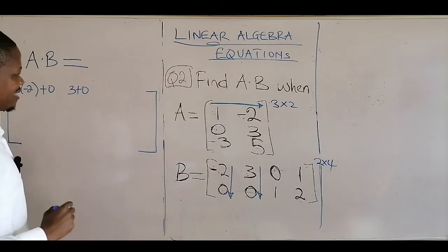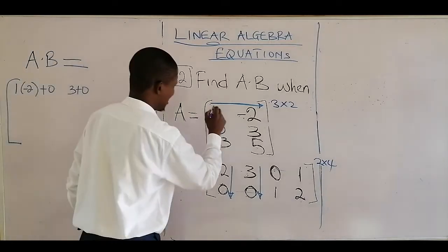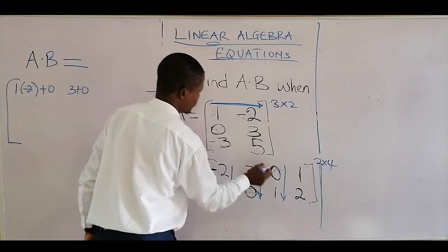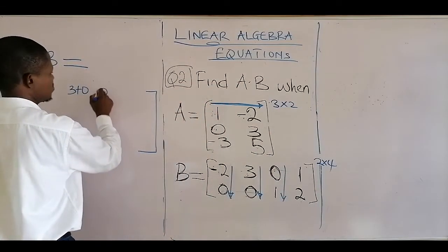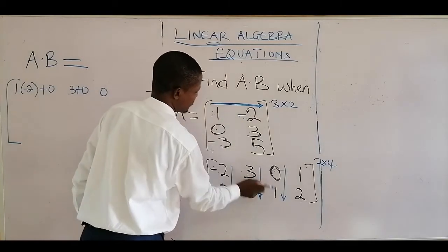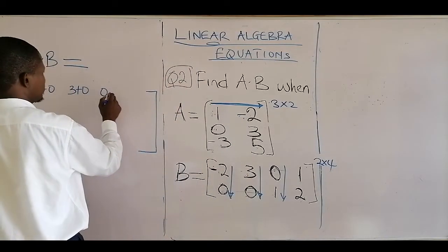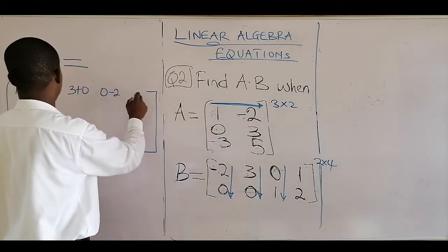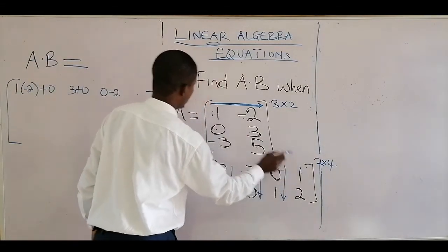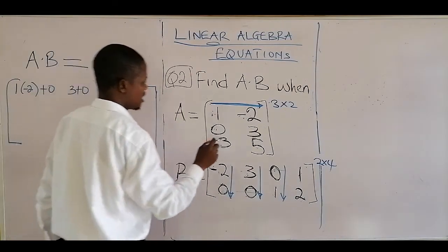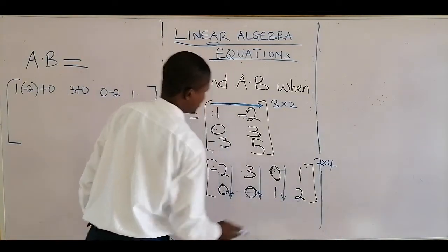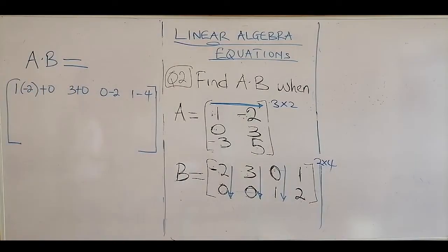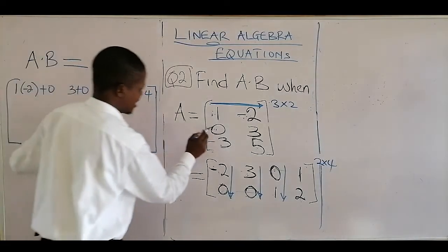The third element on the first row uses the third column: 1 times 0 is 0, and minus 2 times 1 is minus 2, giving minus 2. The last element on that row is 1 times 1 is 1, and minus 2 times 2 is minus 4.